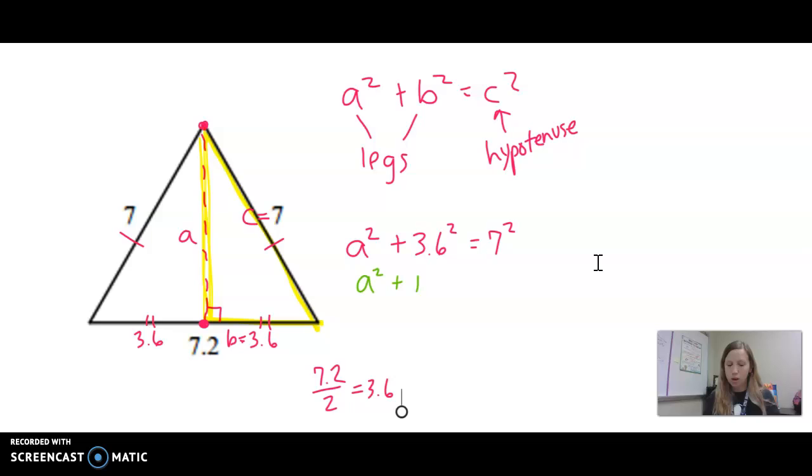Which is 12.96. And 7 squared, 7 times 7 is 49.